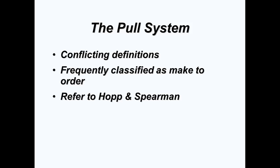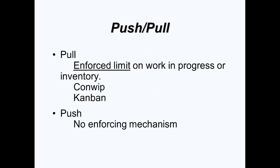Workflow control is frequently associated with the pull system. This system is frequently represented in the literature with conflicting definitions. In particular, it is frequently classified as make-to-order. But I prefer the definition composed by Wallace Hopp and Mark Spearman in their 2004 MSOM paper. Hopp and Spearman fundamentally distinguish push and pull according to whether or not a system enforces a limit on work in progress. A pull system is one that enforces a hard limit on work in progress or inventory. Typical examples of pull mechanisms are Kanban and ConWhip. On the other hand, a push system is any system that does not enforce a hard limit on work in progress.